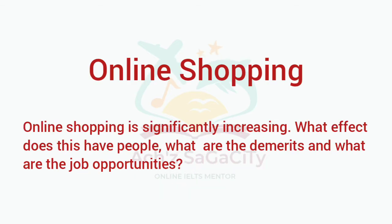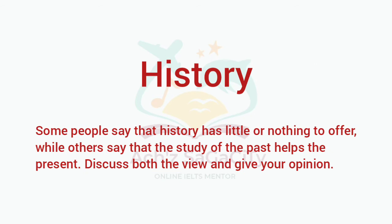Second topic: Online Shopping. Online shopping is significantly increasing. What effect does this have on people? What are the demerits and what are the job opportunities? They ask for three things: the effect on people, the demerits, and job opportunities. Try to answer in a complete way. It's a direct question type.